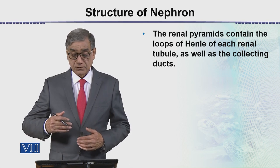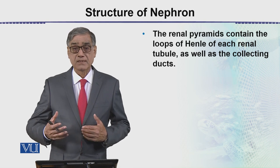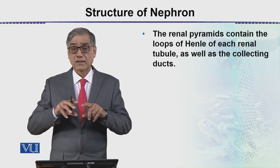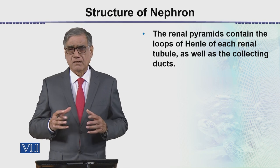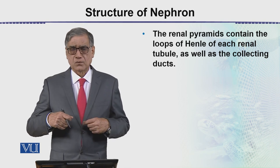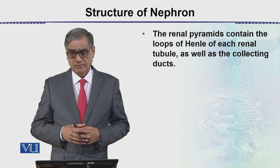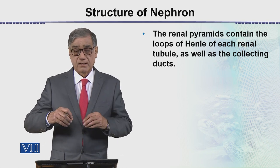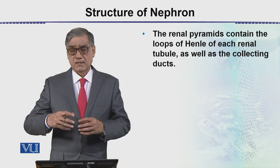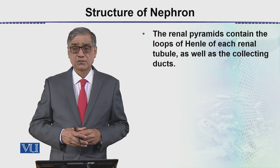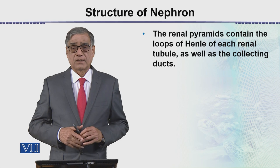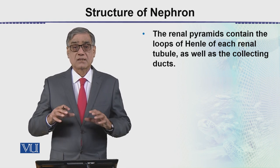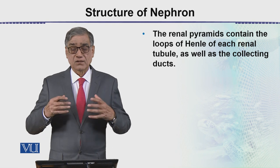The renal pyramids contain the loop of Henle as well as the collecting ducts. These conical regions number about 8 to 18. From here, urine moves into the ureter and then to the exterior. This concludes the structure of the nephron.